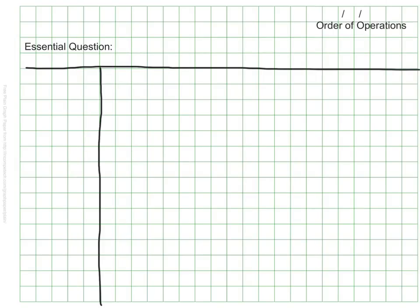We'll also put our essential question at the top. What we want to know today is when we see a problem with multiple operations, how do we know which operation to do first?